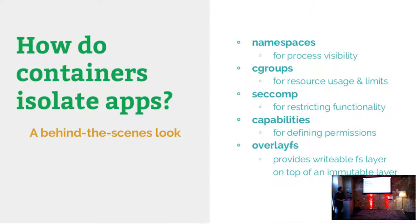You have capabilities, which are like permissions basically. The Linux kernel developers had higher hopes for capabilities than what they actually got out of them, but they still have some uses. And then you have overlayfs - it's actually called overlay now. You have basically a multi-layer file system: you have the immutable layer, and then you have the writable layer that your app can write to and persist.